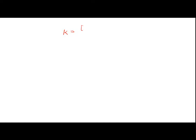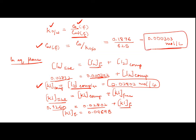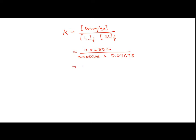The stability constant K = concentration of complex / (concentration of free iodine × concentration of free potassium iodide). Using the calculated values: K = 0.02802 / (0.000303 × 0.09698). This gives the value of the stability constant of the iodine–KI complex.